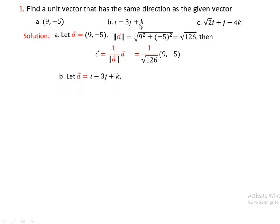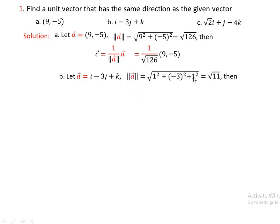Part (b): let vector a = i - 3j + k. Find the unit vector in the same direction. The norm of a is the square root of 1² + (-3)² + 1², which is the square root of 1 + 9 + 1, equal to the square root of 11. Applying the formula, the unit vector c is 1 over the square root of 11 times (i - 3j + k).